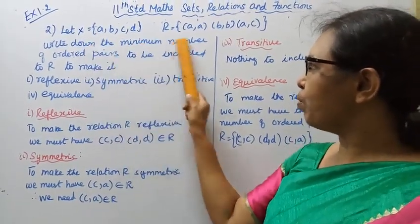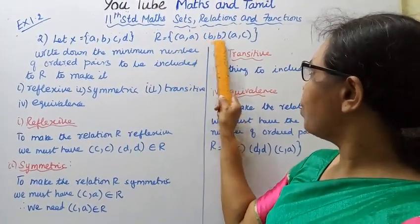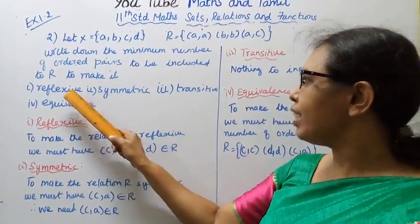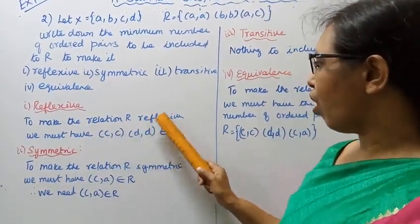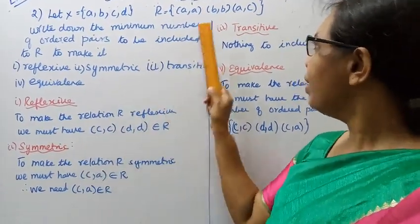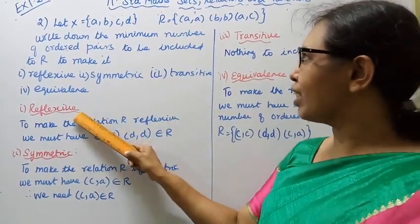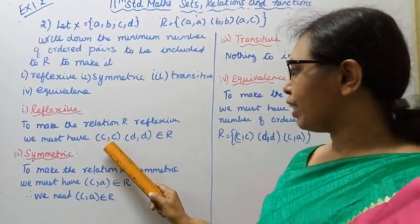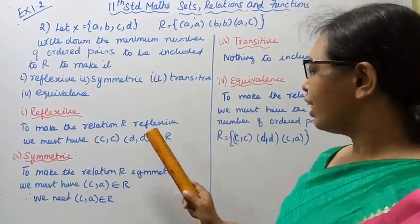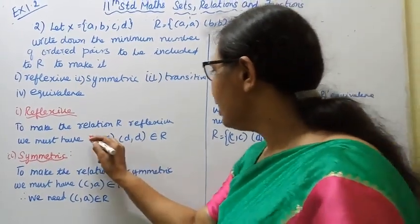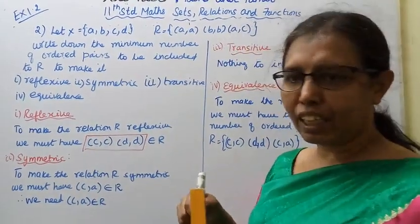Write down the minimum number of ordered pairs to be included to R to make it reflexive. To make the relation R reflexive, we must have (a,a), (b,b), (a,c) already present. Since we have a, b, c, d in the set, we need to add (c,c) and (d,d) to R.